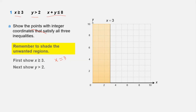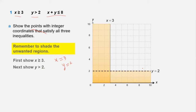For y > 2, we plot the line y = 2 as a dotted line, because it is strictly greater than — 2 is not included. When the inequality is greater than or less than, we use a broken line. We shade the unwanted region below y = 2. For example, taking a point with y-coordinate 3, which is greater than 2, confirms those points are in the wanted region.